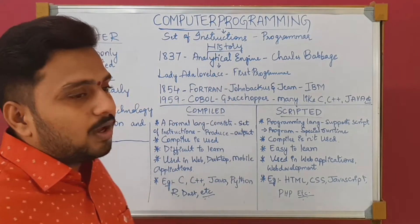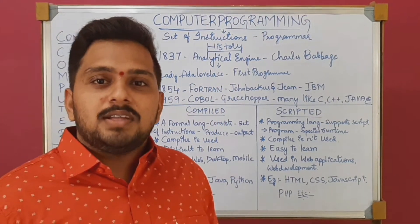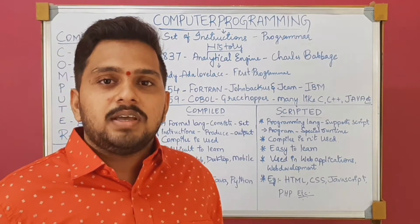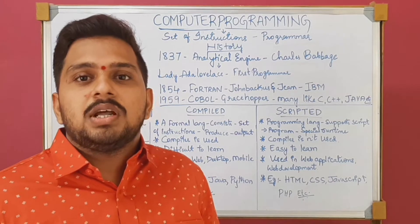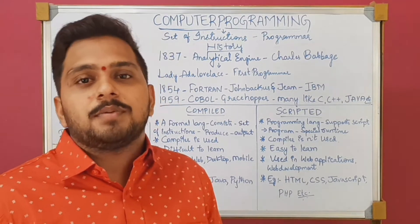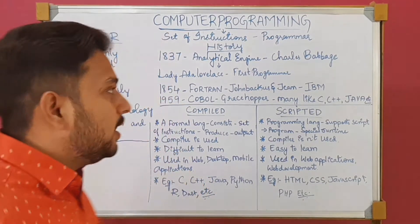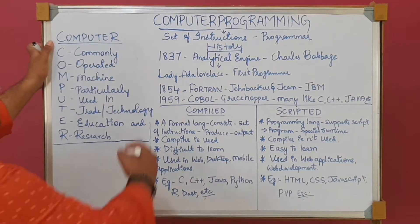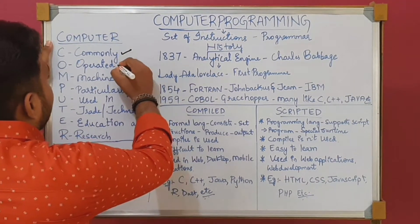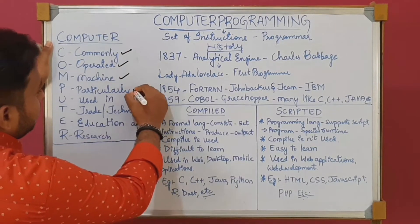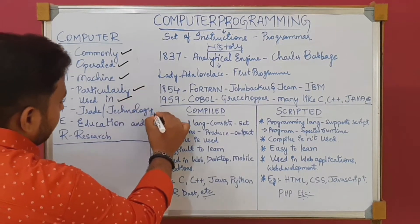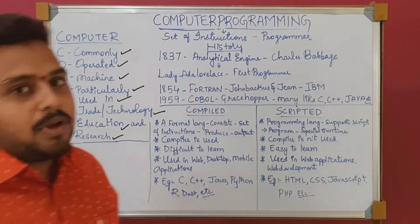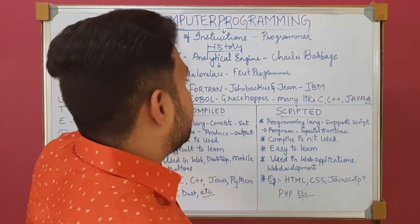As we all know, a computer is an electronic device that stores and processes data, or we can say a computer is an electronic machine that manipulates data or information. Both are the same. Let us take a look at the abbreviation of computer. The word computer stands for Commonly Operated Machine Particularly Used in Technology, Education and Research. Let us come back to our today's topic: computer programming.